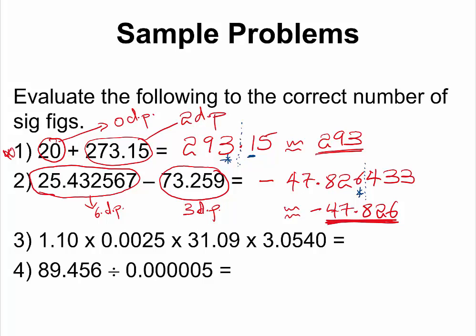Let us now look at question number three. For question number three, we are dealing with a multiplication of measurements. If you enter 1.10 multiplied by 0.0025 multiplied by 31.09 multiplied by 3.0540 into your calculator, you should get 0.261109365. But as you already know, that is not going to be the correct answer, because we are treating all of these numbers as measurements.